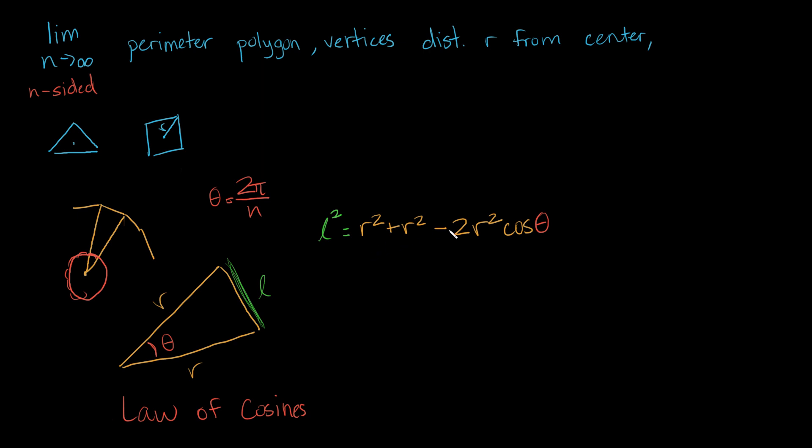Let's see what we can get from this. We're trying to calculate l. First of all, let's take out the r squared. So what we are left with is l squared equals r squared times 2 minus 2 cosine theta. We can just say that l squared equals 2r squared times 1 minus the cosine of theta.